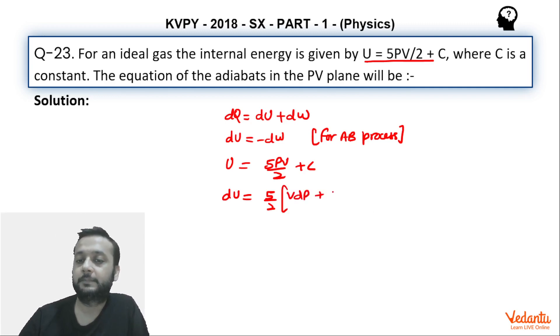We get VdP plus PdV. So we have differentiated using product rule, thik hai. So we can put this value over here in this equation. dU ki value we can substitute. We already know that dW we can write PdV, okay.